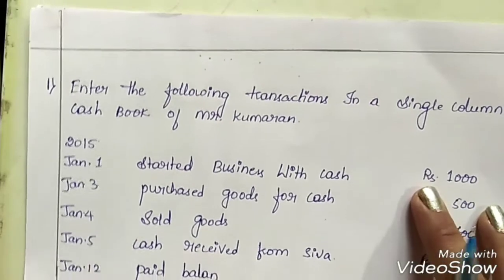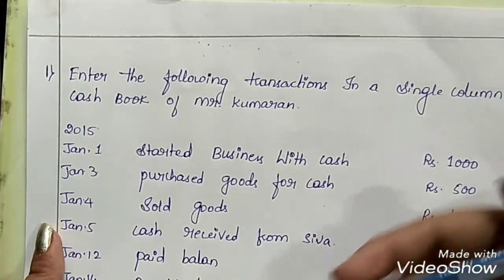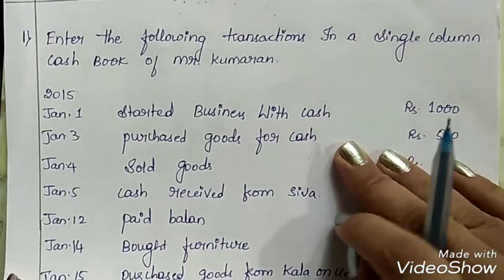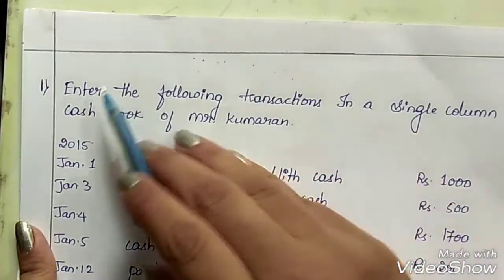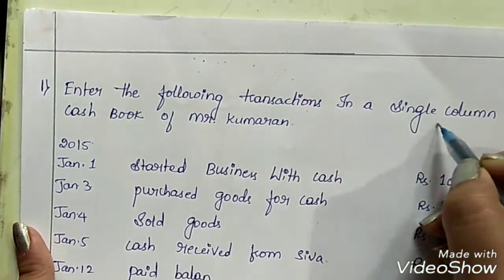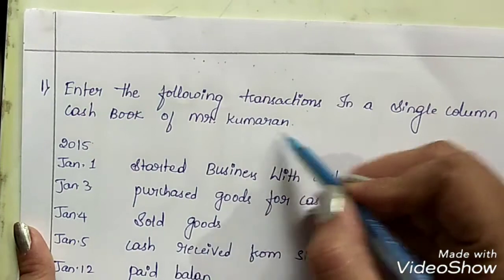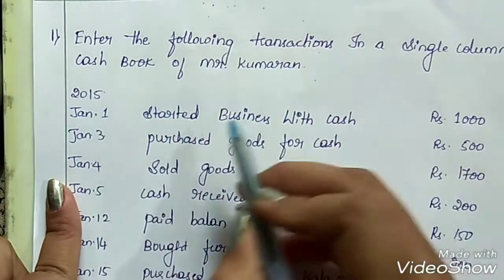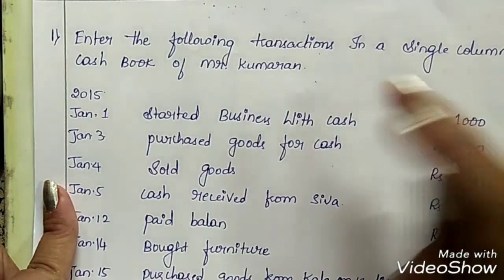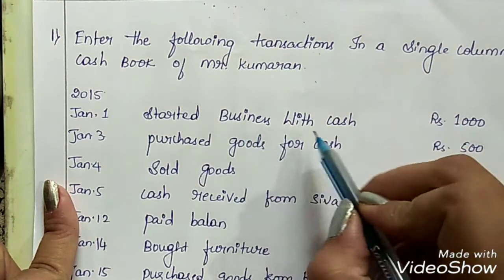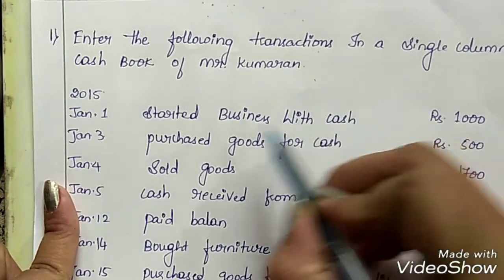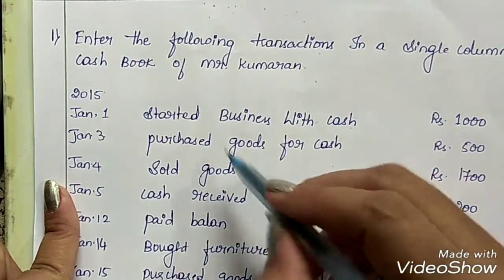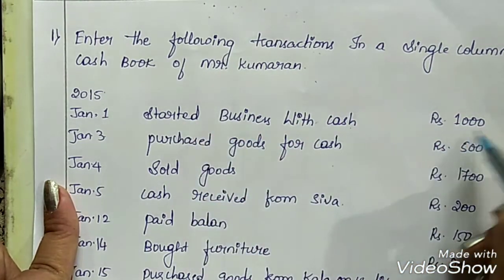Now let's look at the example. This is a very simple, basic problem relating to single column cash book. We need to enter the following transactions in a single column cash book of Mr. Kumaran. The first transaction is on January 1st, 2015 — started business with cash Rs. 1000. As mentioned, the opening cash balance is always given first. This means Mr. Kumaran is bringing cash into the business.